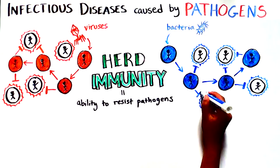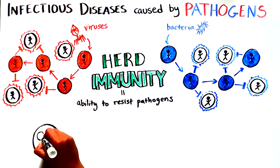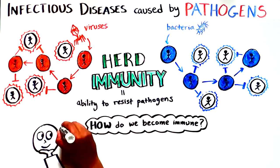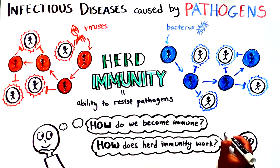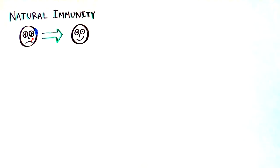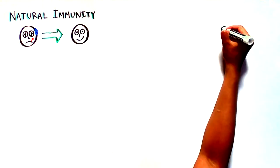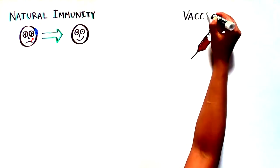To understand herd immunity, we first need to understand how we become immune to pathogens and how herd immunity works under ideal circumstances. Our bodies can gain immunity to pathogens in one of two ways: by getting and recovering from an infection, also known as natural immunity, or by receiving a vaccination.